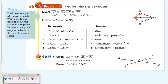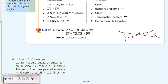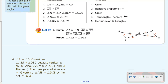Here's the last 'you try': given the information shown, prove these two triangles congruent. Pause the video and work it out—you can use a two-column proof or a paragraph proof. Here's the book answer: angle A is congruent to angle D—given. Angle ABE is congruent to angle DBC because vertical angles are congruent.